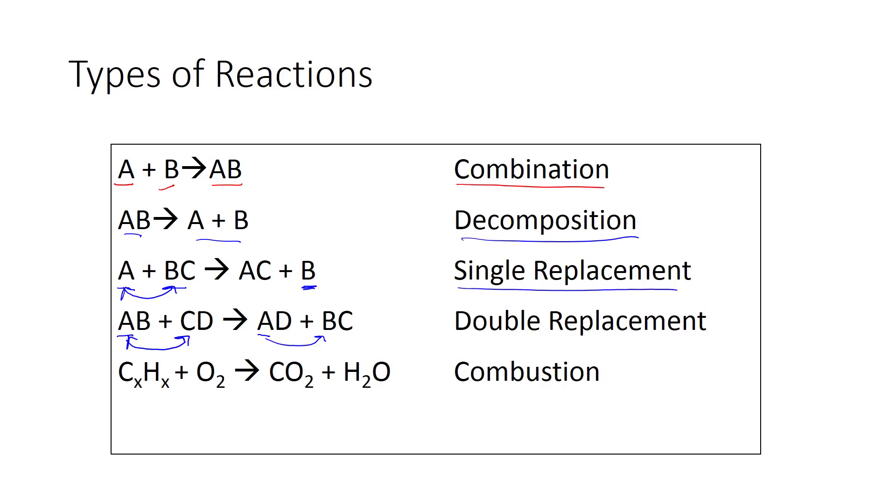A combustion reaction doesn't really follow a great set of rules like the previous four reactions. But combustion reactions always have a certain number of carbons and hydrogens burning in the presence of oxygen, and you always get the same products: carbon dioxide and H2O. So if you can't quite figure out what type of reaction it is and there's only carbons, hydrogens, and oxygens, it is a combustion reaction.